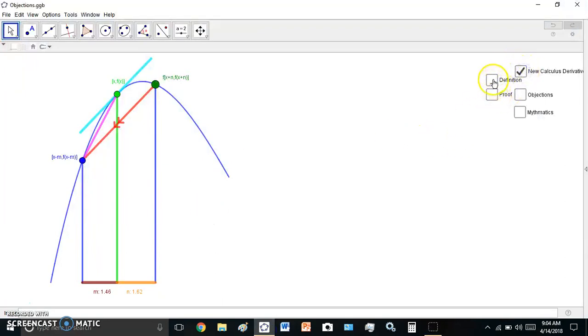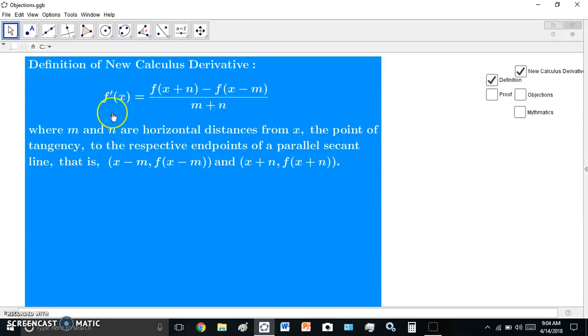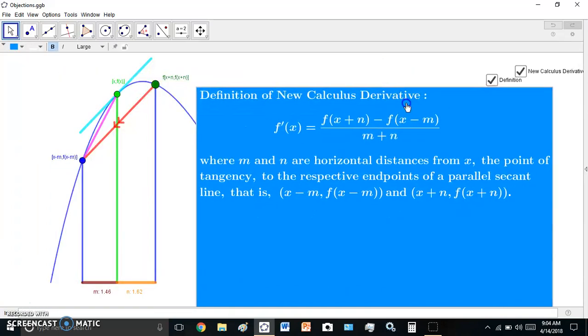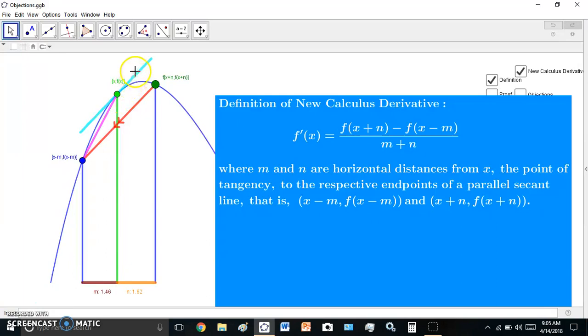The new calculus derivative is defined this way. The derivative or the slope of the tangent line, this light blue tangent line, is found by finding the slope of any one of the many parallel secant lines. f(x+n) is found by this point here, and f(x-m) this point, and m is a distance between the point of tangency and one endpoint of the secant, and n the other distance.